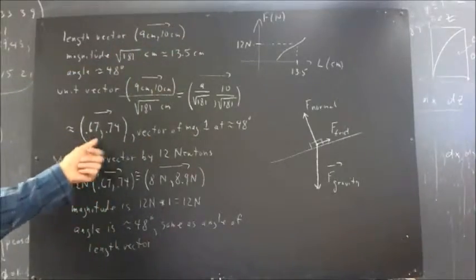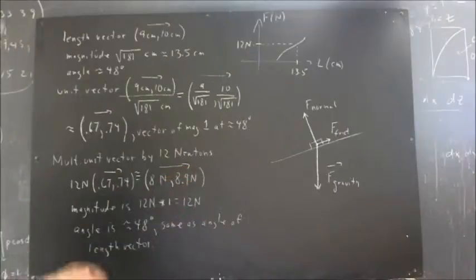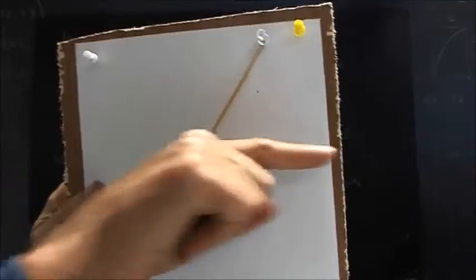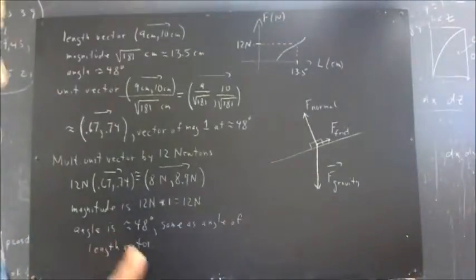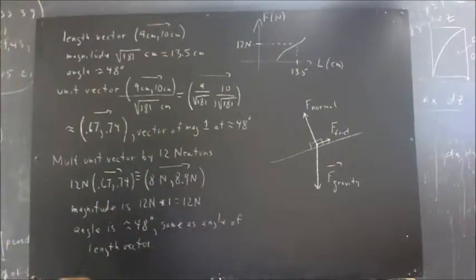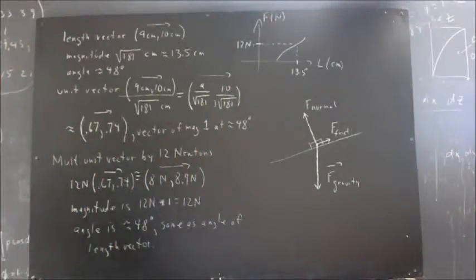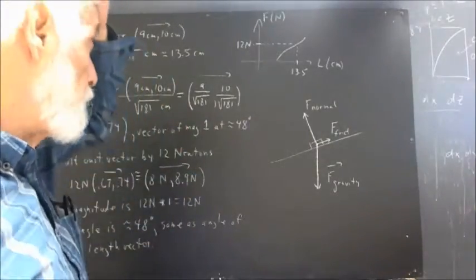Then, the unit vector in the same direction would still be this. And when we multiply that unit vector by 12 newtons, we get the components of the force. So the force exerted by this rubber band is equivalent to a force of 8 newtons in the x direction and 8.9 newtons in the y direction. If we were to exert forces of 8 newtons this way and 8.9 newtons this way, it would have exactly the same effect as this one single force at 48 degrees. So that's what that's good for. And that's going to lead us to a lot of interesting analysis.